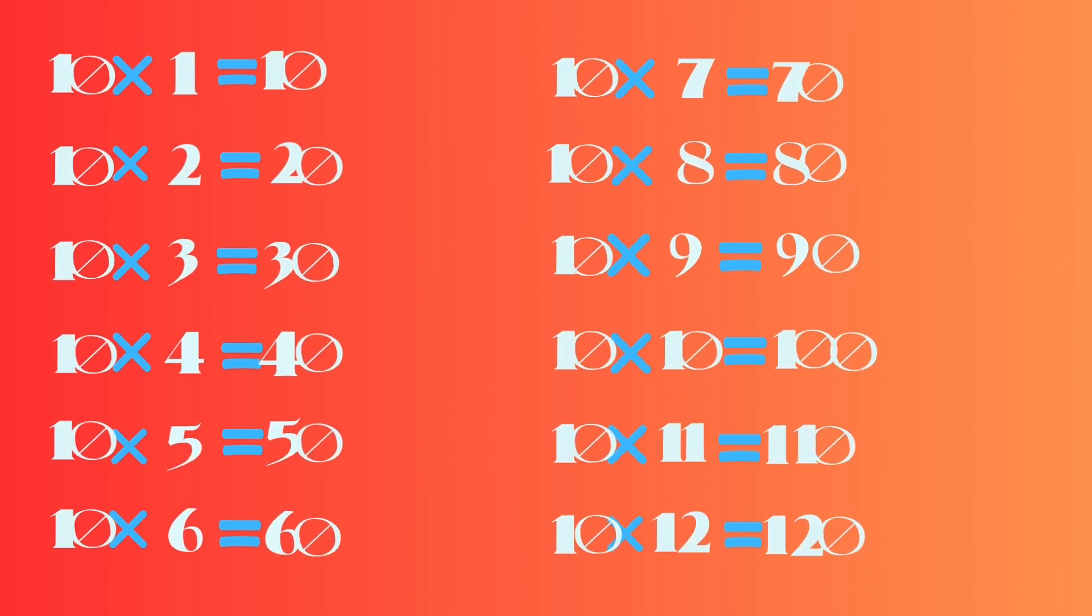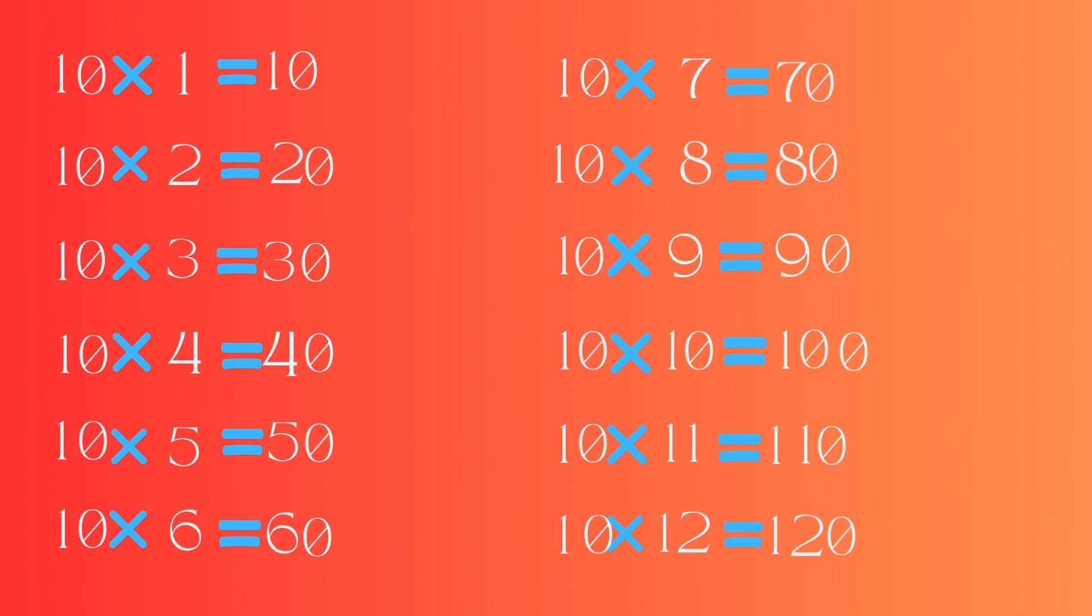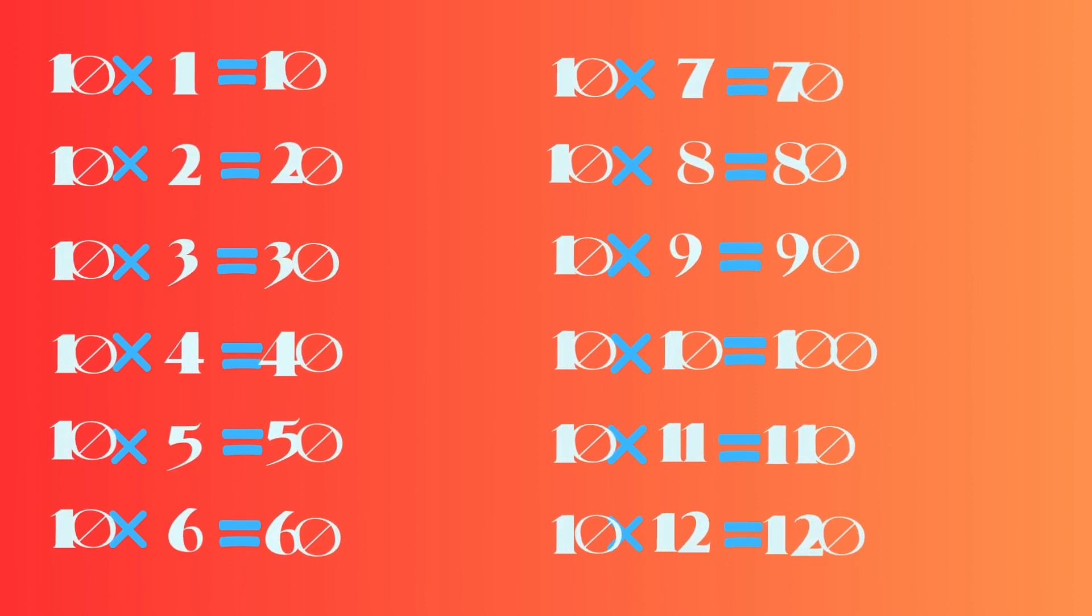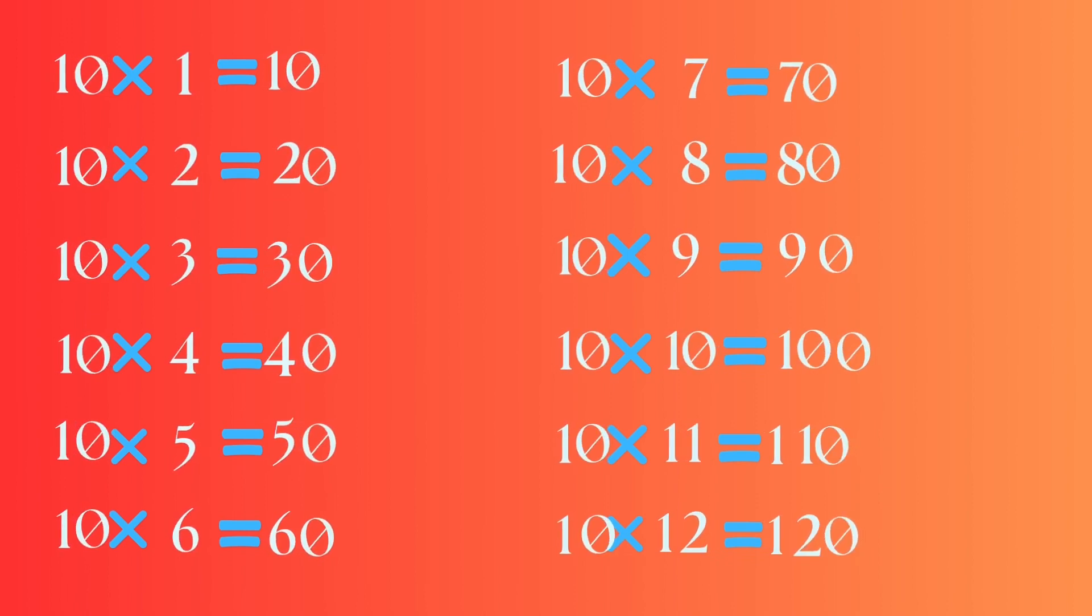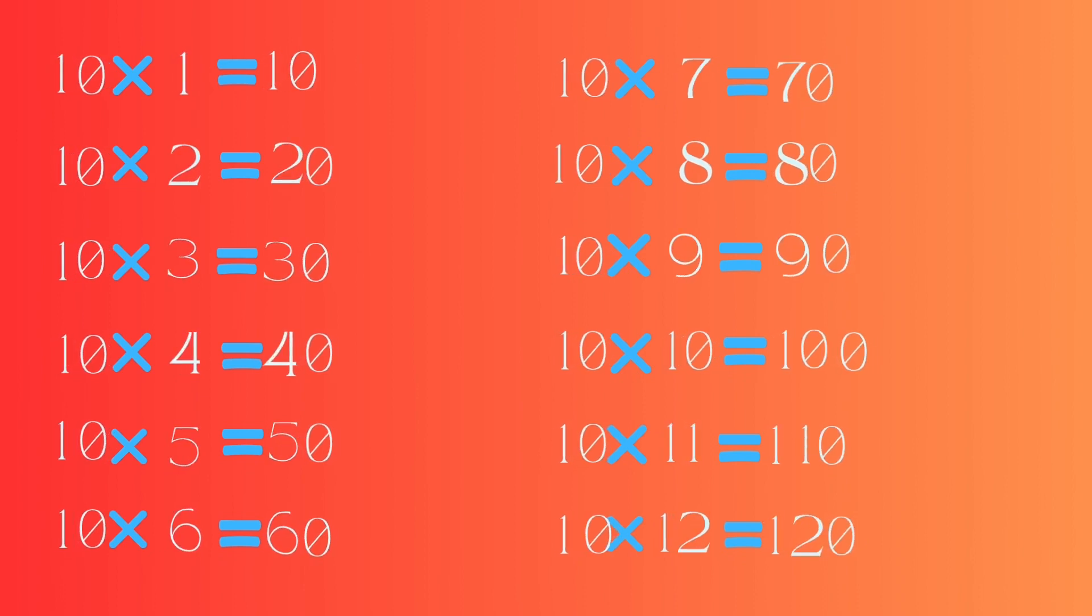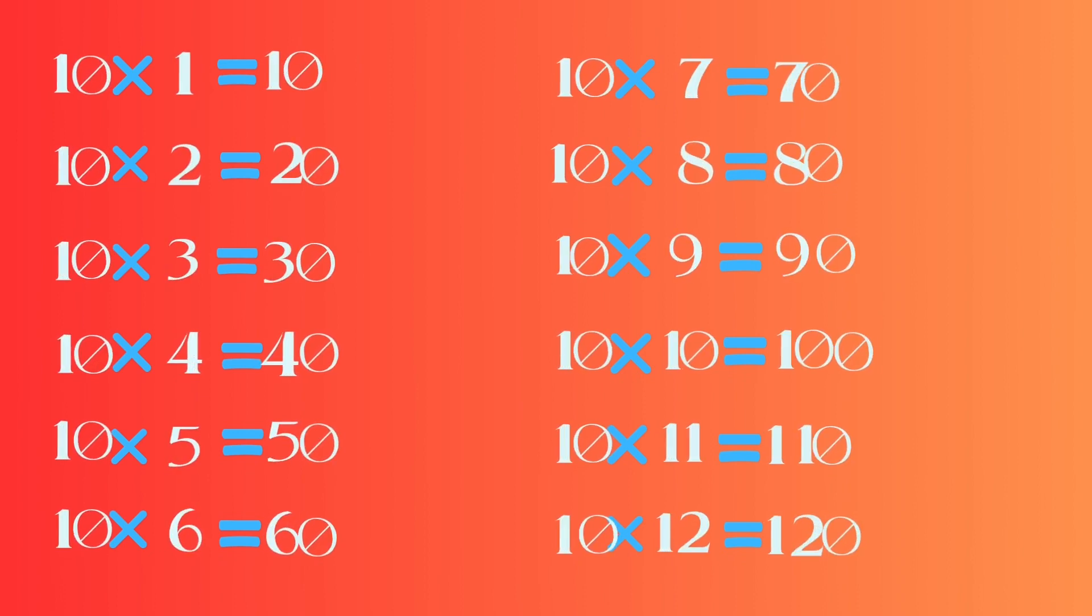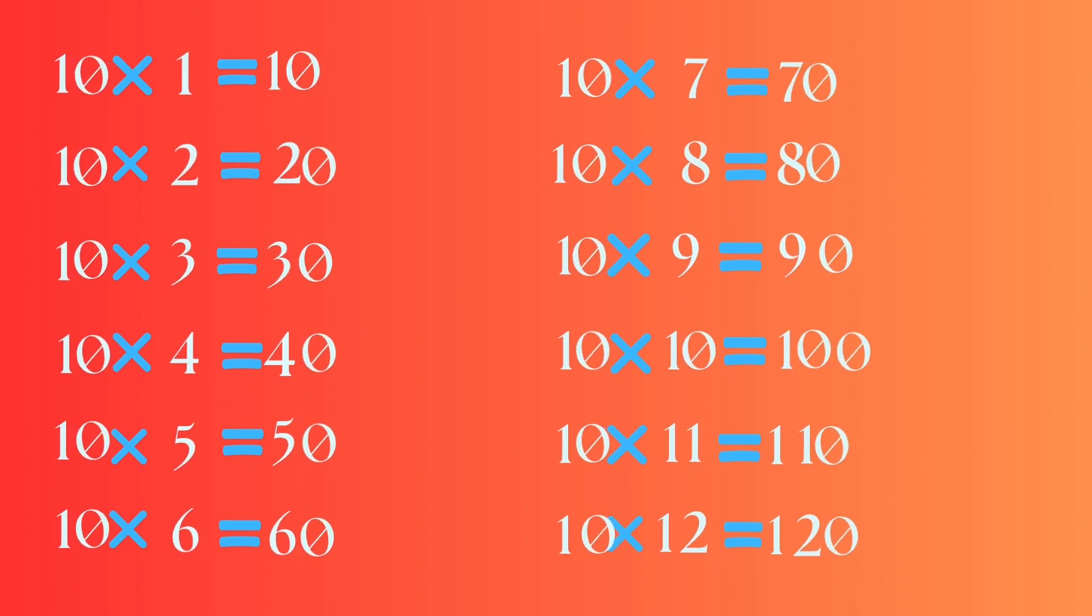10 sevens are 70, 10 eights are 80, 10 nines are 90, 10 tens are 100, 10 elevens are 110, 10 twelves are 120. Let's do it again.